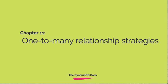This is chapter 11, about one-to-many relationship strategies. I love to start off the strategies section with this chapter because it's so different from a relational database. In a relational database, there's basically one way to handle a one-to-many relationship, but in this chapter we're going to see five different ways to handle it in DynamoDB.